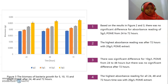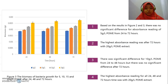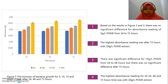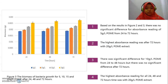This is the graph of biomass of bacterial growth for 5, 10, 15, and 20 gram per litre POME after 24, 48, and 72 hours. Based on the results in figures 2 and 3, there was no significant difference for absorbance reading of 5 gram per litre POME from 24 to 72 hours. The highest absorbance reading was after 72 hours with 20 gram per litre POME extract. There was a significant difference for 10 gram per litre POME from 24 to 48 hours, but no significant difference after 72 hours. The highest absorbance reading for all 24, 48, and 72 hours was observed with 20 gram per litre POME extract.